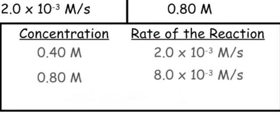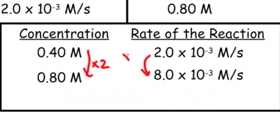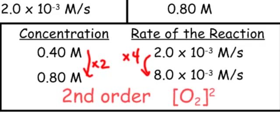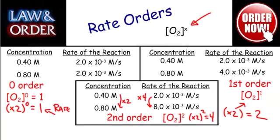We also have second order reactions. If concentration goes from 0.4 molar to 0.8 molar again — doubled — but the rate quadrupled, that's second order, meaning we have an exponent of 2. So if oxygen gas doubles and it gets squared, 2 squared is 4, and the rate goes up by 4 times. In AP chemistry, we'll only have zero, first, and second order reactions.